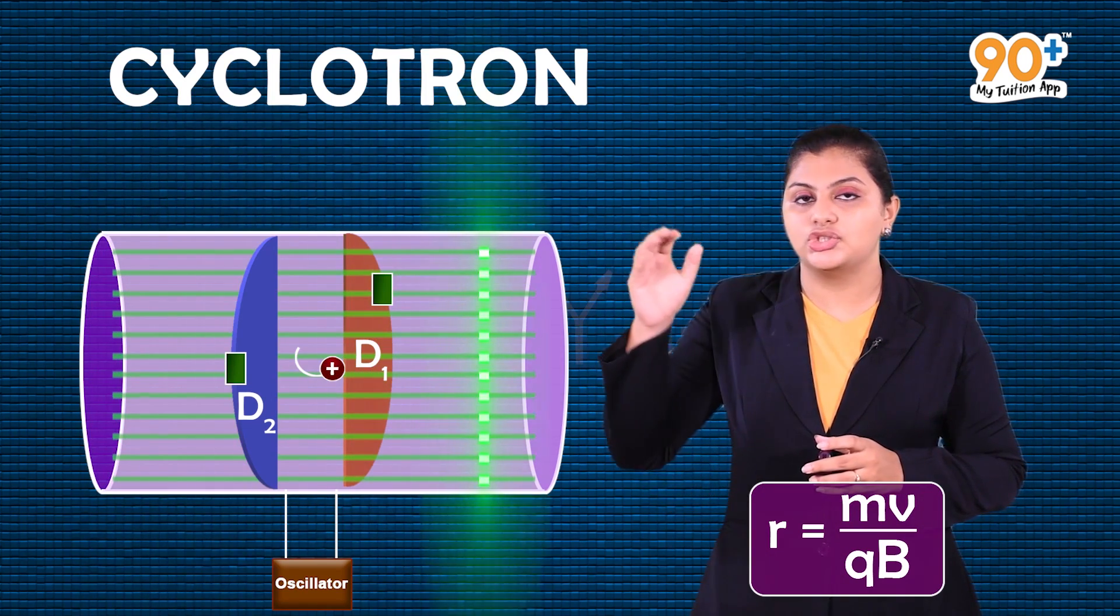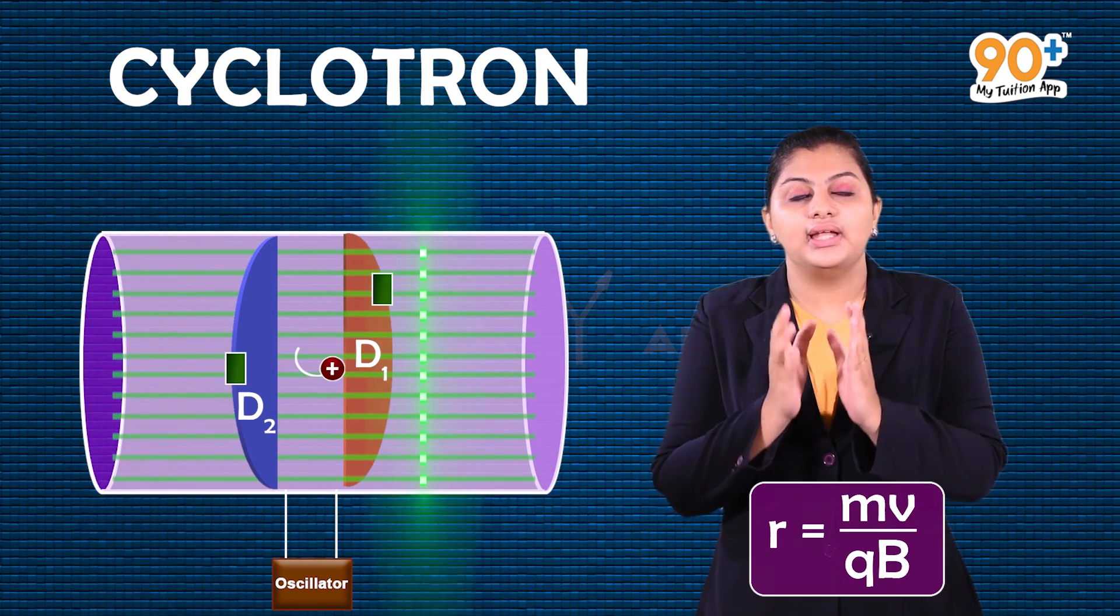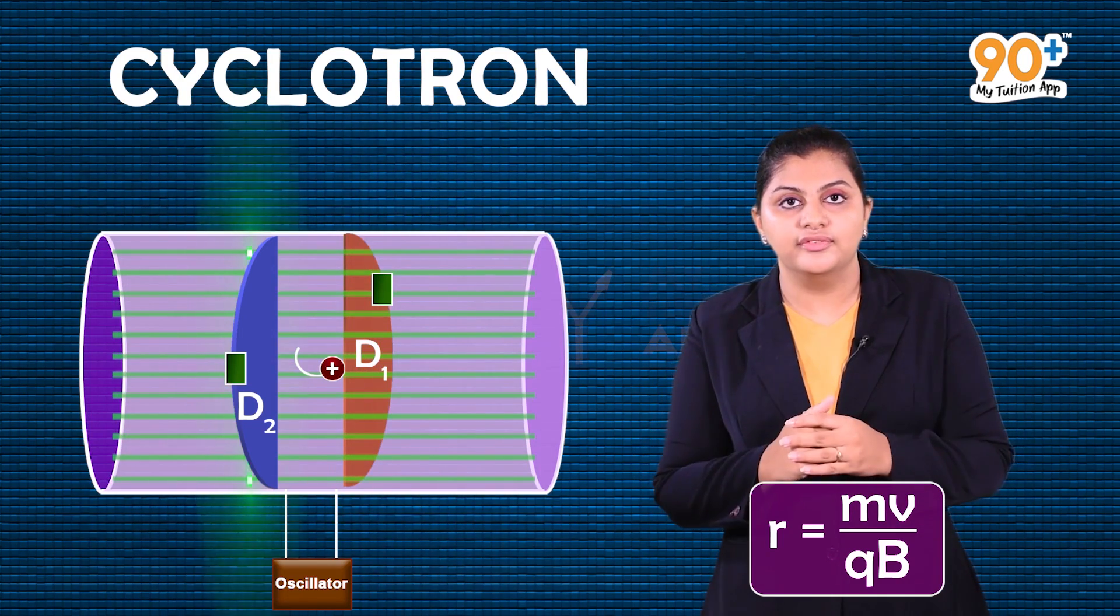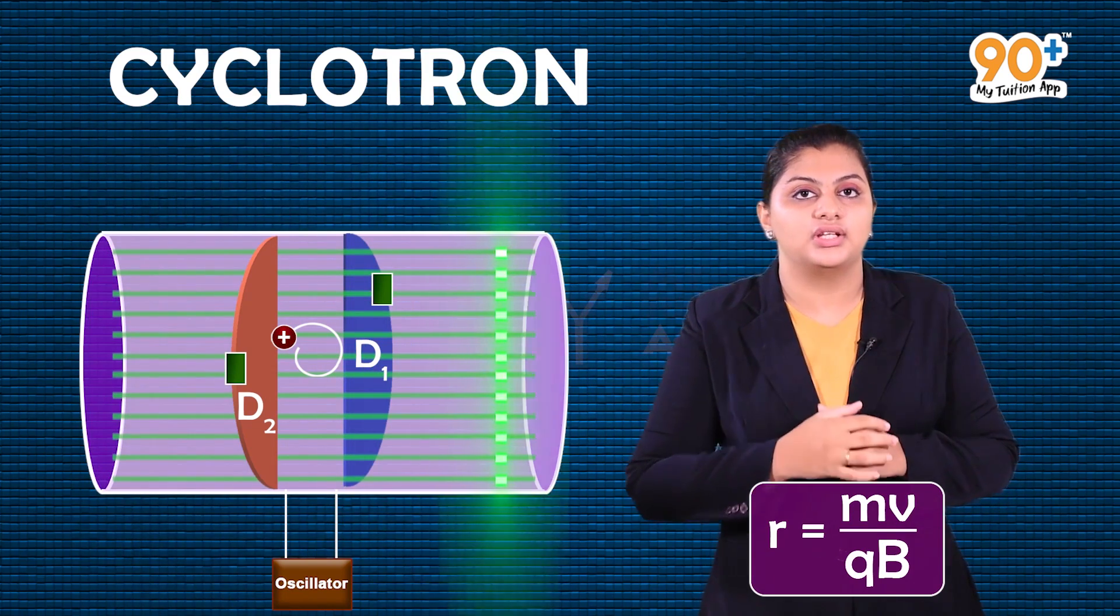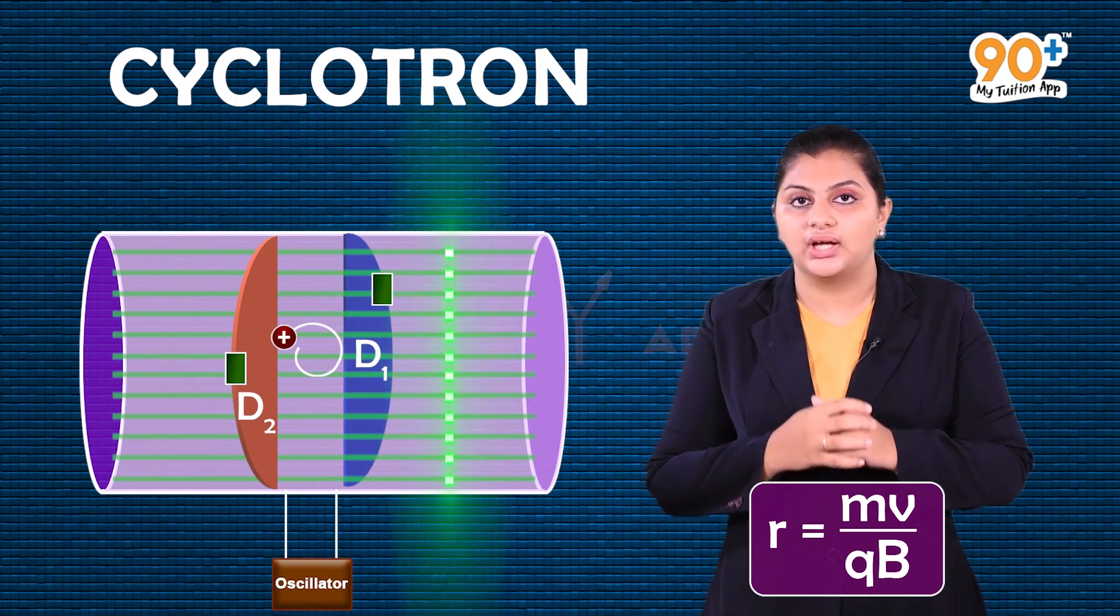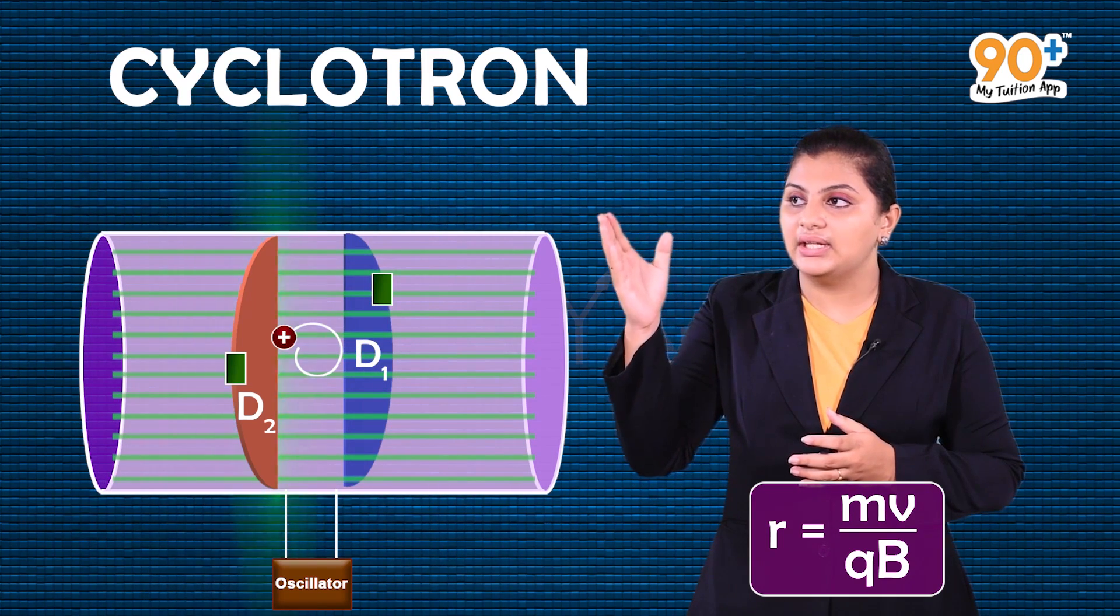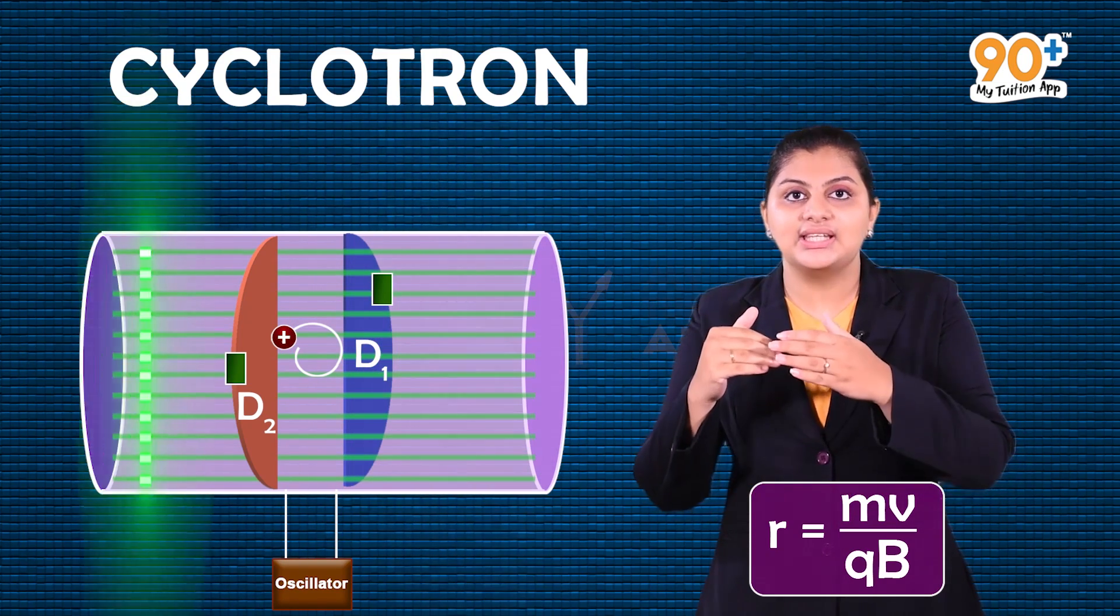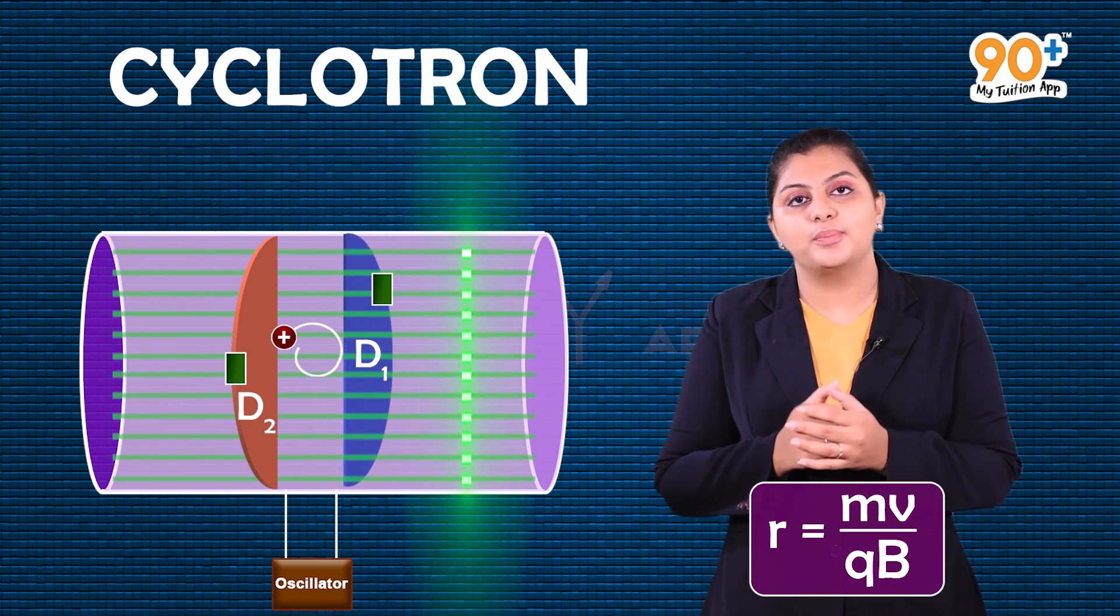After completing the circular path, the ion reaches the gap again where there's a high electric field. With greater acceleration, the ion moves to D2 as the oscillator polarity reverses. The ion again has circular motion with greater radius because velocity increases, and they are proportional to each other.